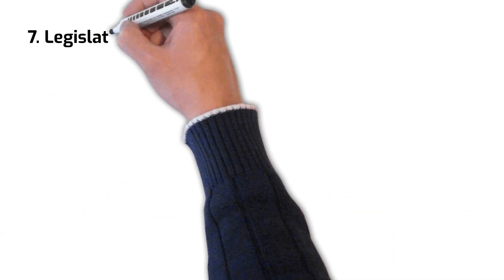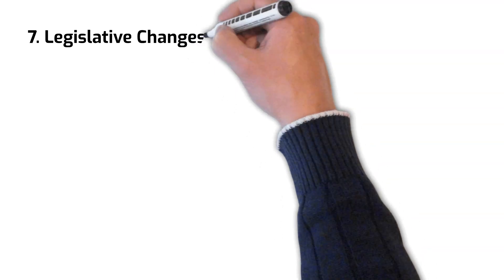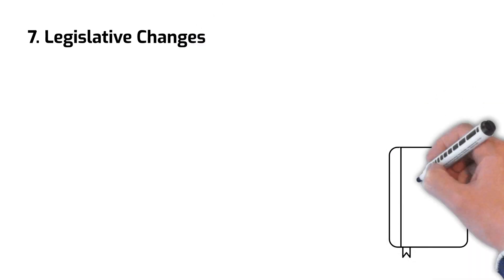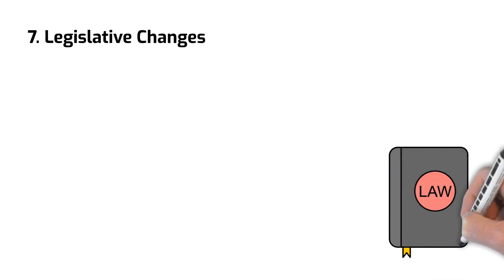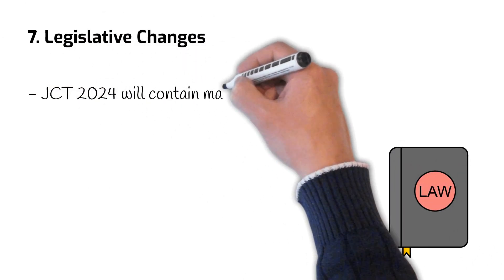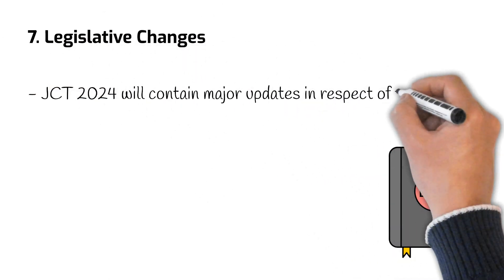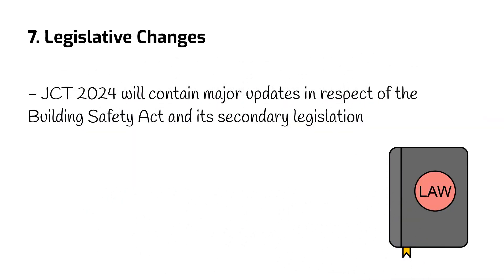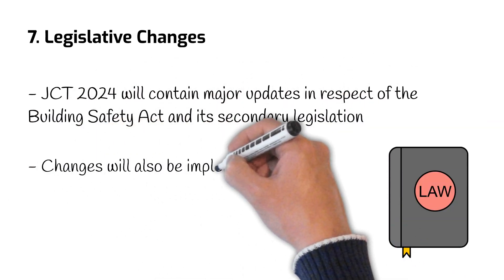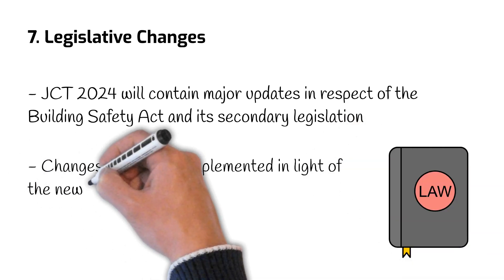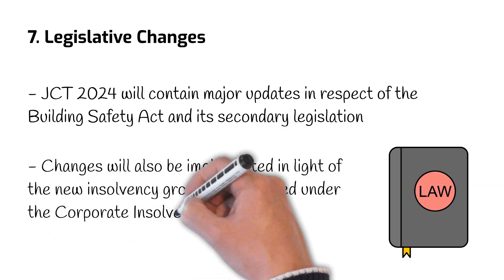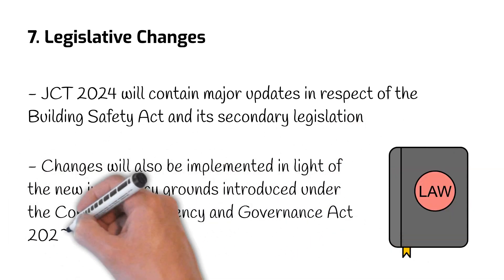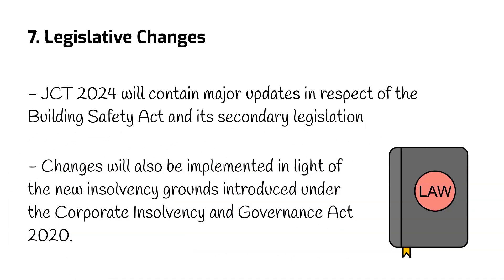Number 7: Legislative Changes. It is also reported that JCT 2024 will contain major updates in respect to the Building Safety Act and its secondary legislation once finalised. Changes will also be implemented in light of the new insolvency grounds introduced under the Corporate Insolvency and Governance Act 2020.